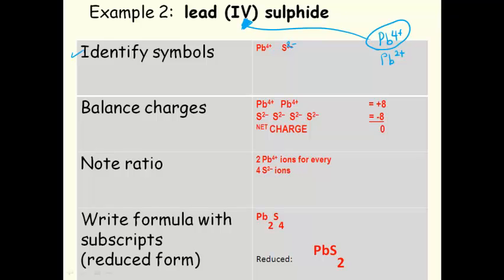Next, after we identify the symbols, balance the charges. We're looking for a common multiple of 4 and 2, which is 8. It takes 2 lead ions to get a charge of +8, and it takes 4 sulfide ions to get a charge of -8. That gives us a net charge of 0.